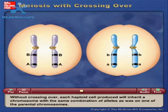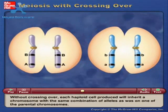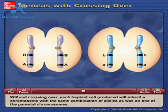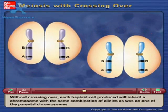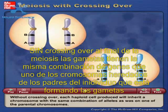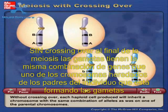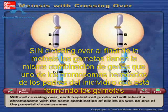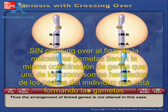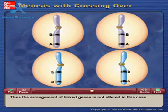Without crossing over, each haploid cell produced will inherit a chromosome with the same combination of alleles as was on one of the parental chromosomes. Thus, the arrangement of linked genes is not altered in this case.